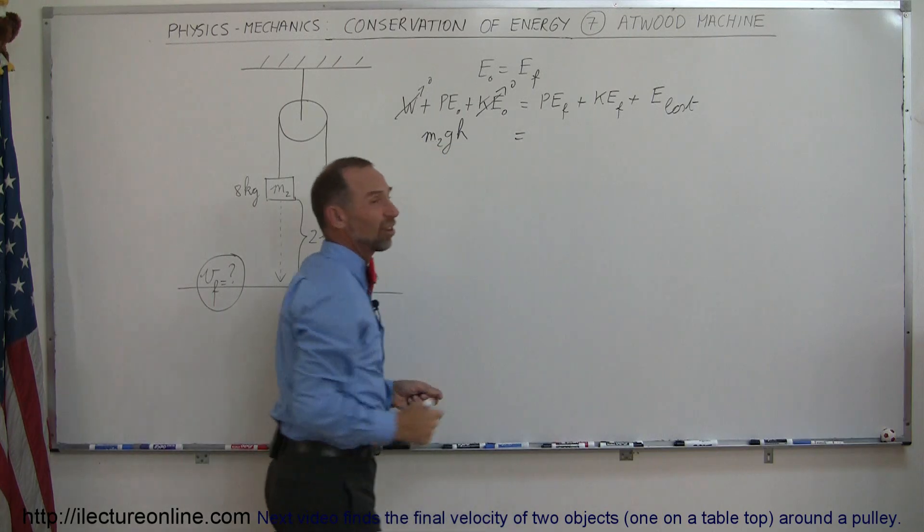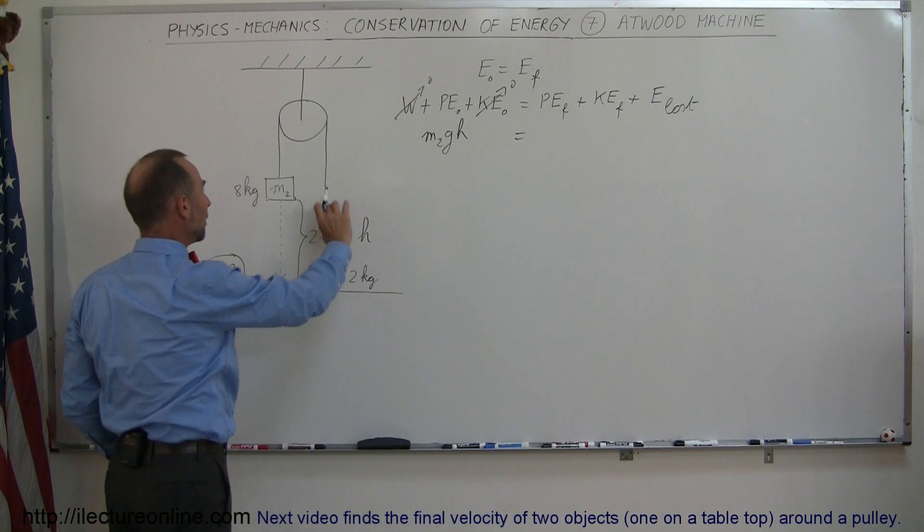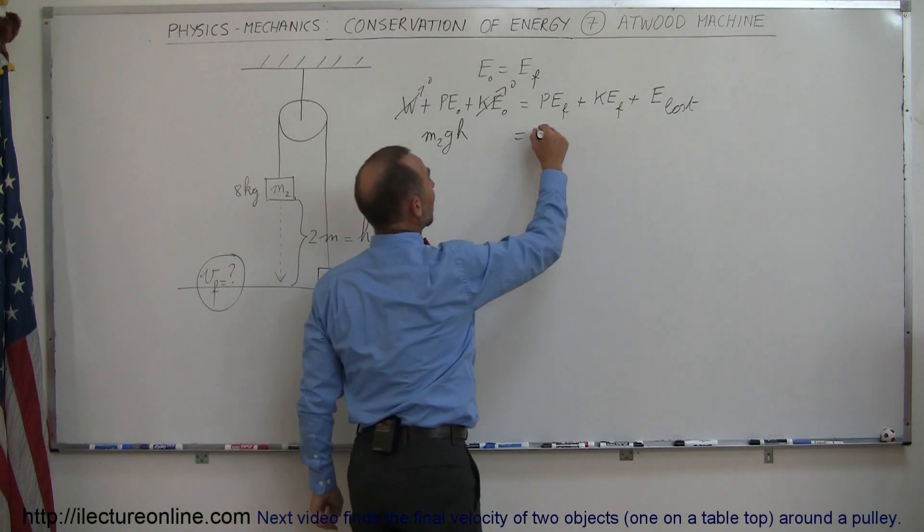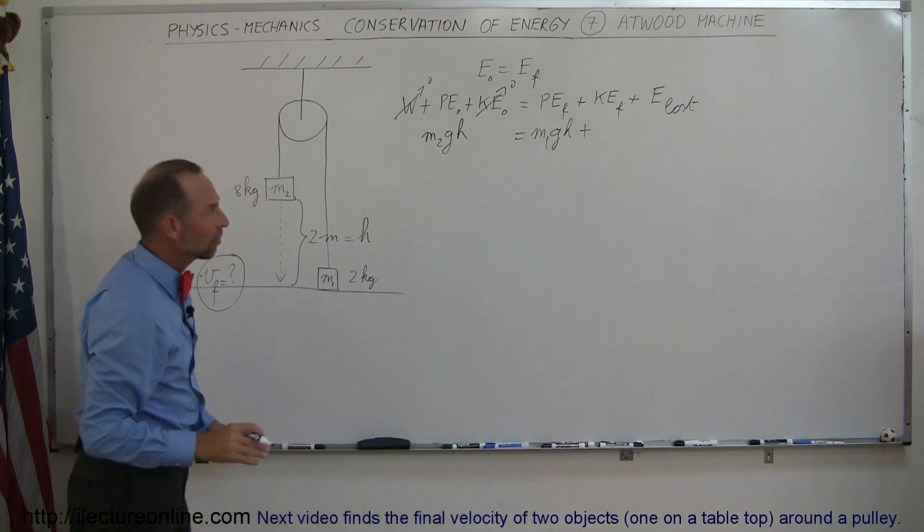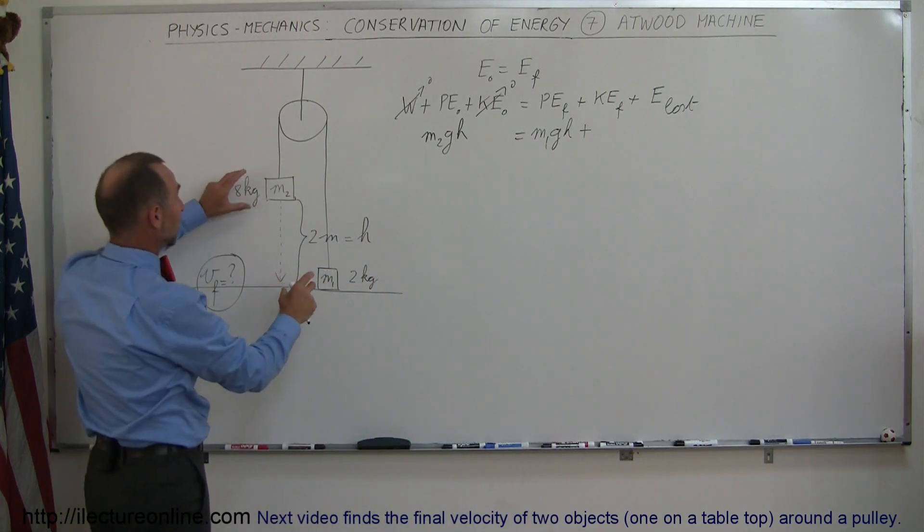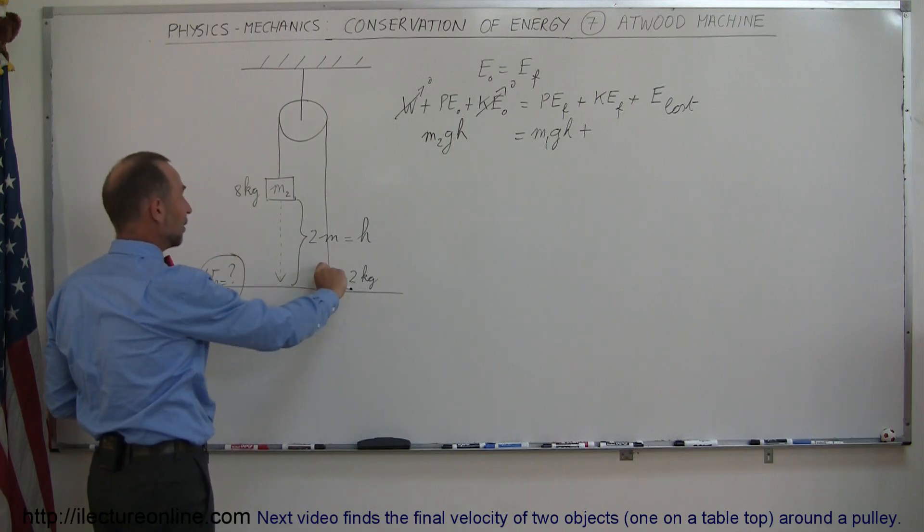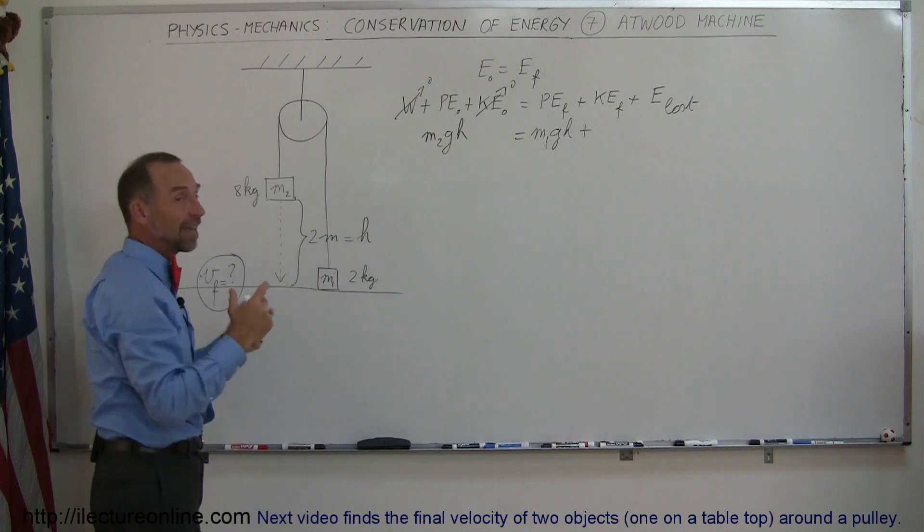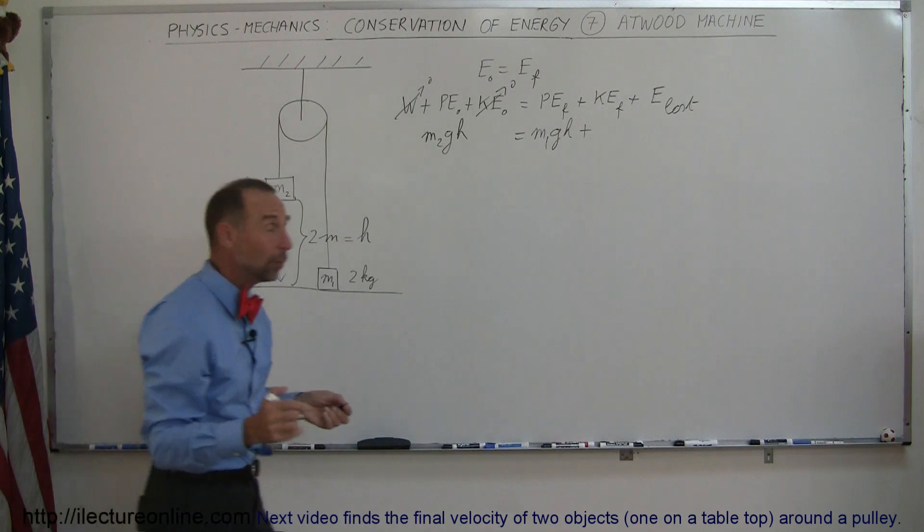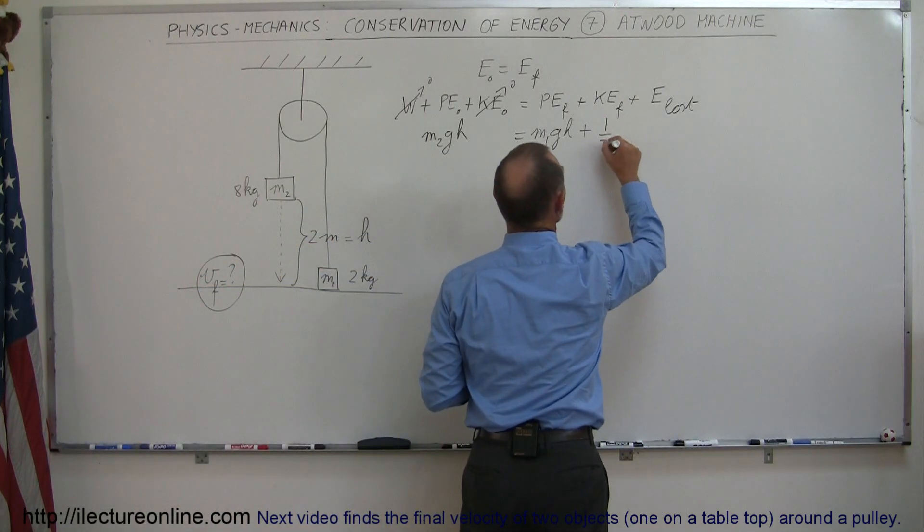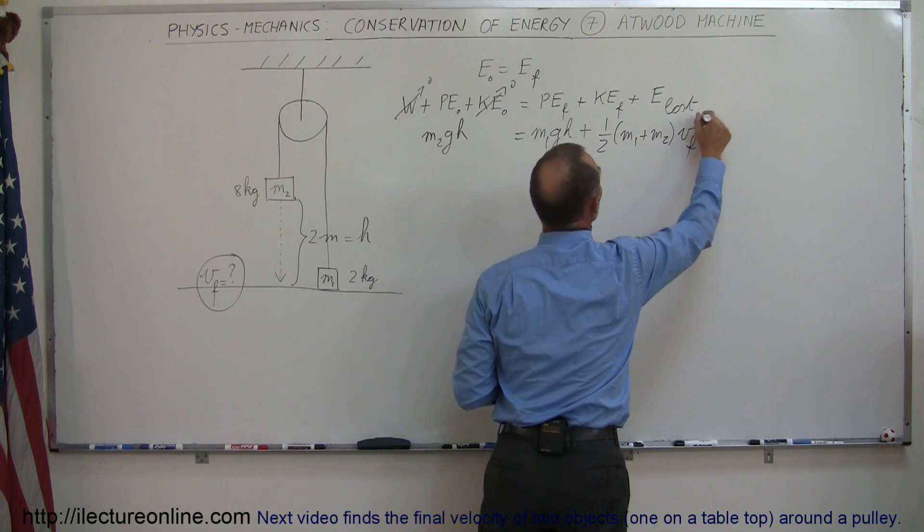That equals the final potential energy. At the end, just before the big mass hits the ground, the small mass will be at a height of 2 meters, so we'll have M1 times G times H plus, just before it hits the ground, the system will have kinetic energy. This mass will be moving downward at some final velocity. This mass will be moving upward at the same velocity, of course, opposite direction. So therefore, they both have kinetic energy, so we can write one half times the sum of the masses, M1 plus M2, times V final squared.